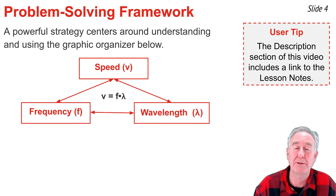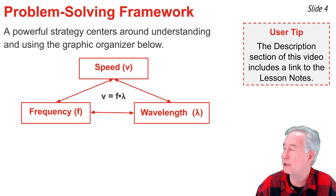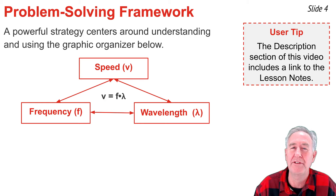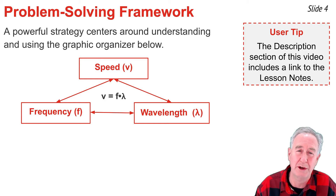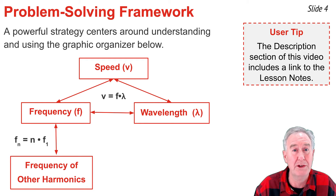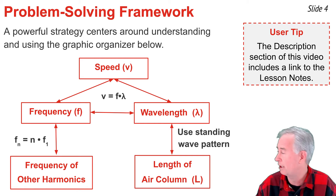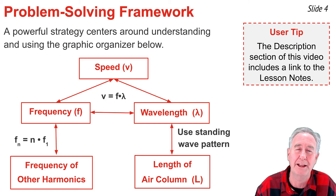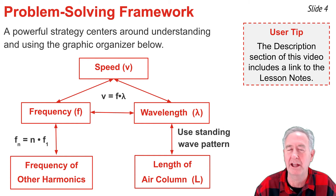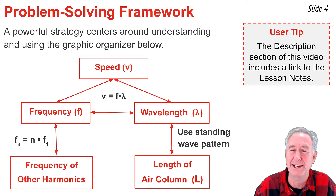My approach to solving closed-end air column problems is based on a graphic organizer. All the quantities in a closed-end air column problem are listed on this graphic. The three most common are frequency, wavelength, and speed, related by v = f × λ. If you know any two, you can solve for the third. Frequencies of all harmonics are related by Fn = n × F1, and the length of the air column is related to wavelength via the standing wave pattern. I will rely on this graphic organizer throughout this video to plot strategy.